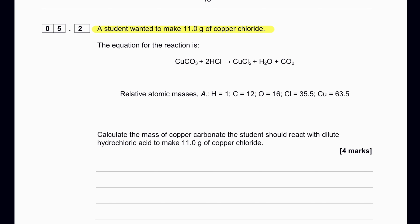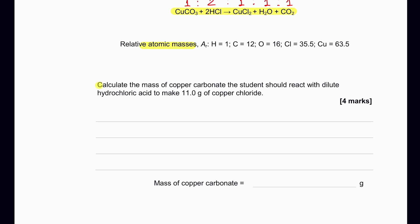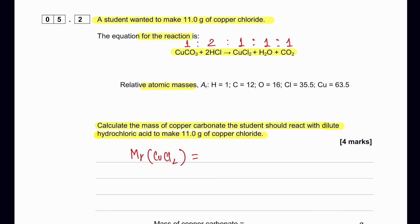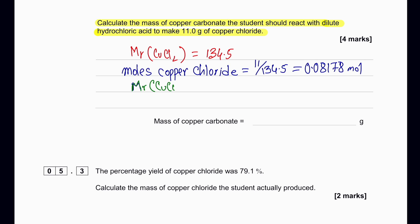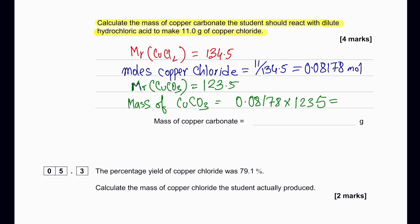A student wanted to make 11 grams of copper chloride. The equation is: CuCO₃ + 2HCl → CuCl₂ + H₂O + CO₂, with a mole ratio of 1:2:1:1:1. The approach is to work backwards: find the Mr of copper chloride, calculate moles of copper chloride from 11g, then since the ratio is 1:1, moles of copper carbonate equals moles of copper chloride, and finally calculate the mass of copper carbonate needed using its Mr.